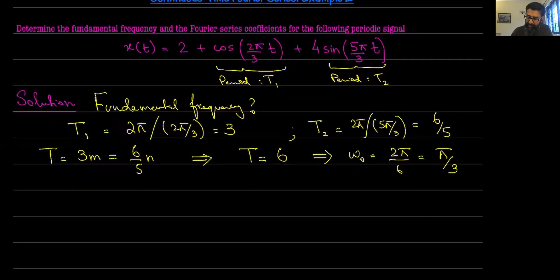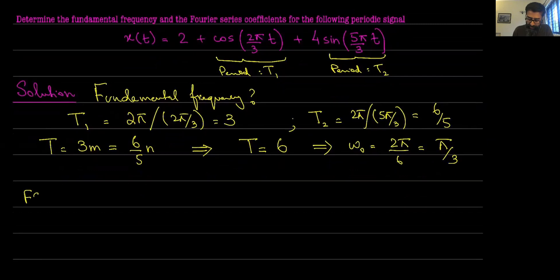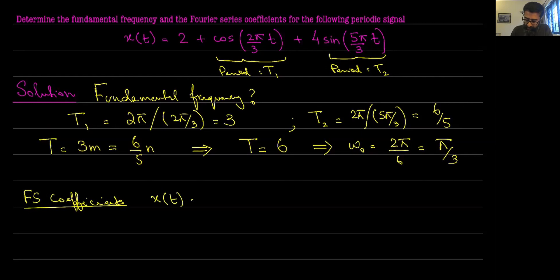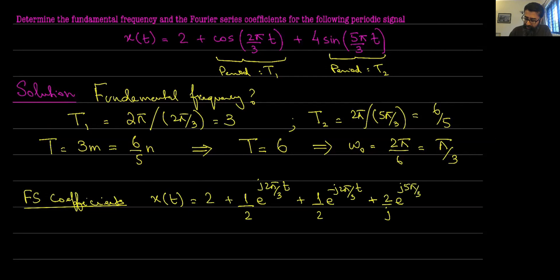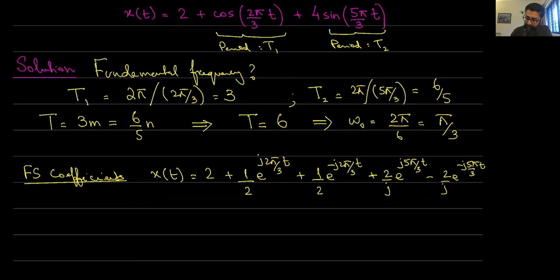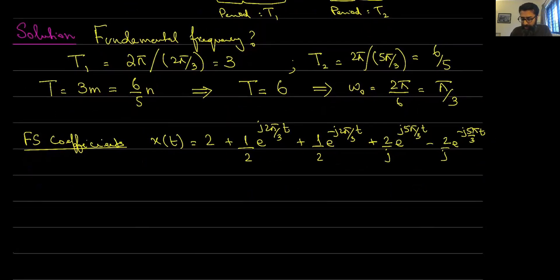Now, given this information, let us move on to determine the Fourier series coefficients using the exponential Fourier series expansion. So x(t) is expressed as: 2 plus (1/2)e^(j·2π/3·t) plus (1/2)e^(−j·2π/3·t) plus (4/2j)e^(j·5π/3·t) minus (2/j)e^(−j·5π/3·t). That is the Fourier series expansion.